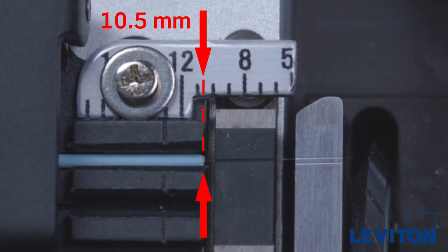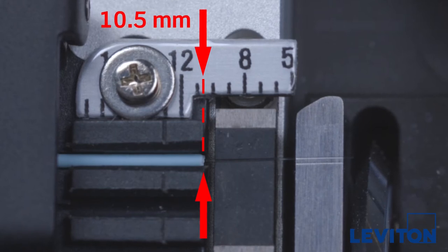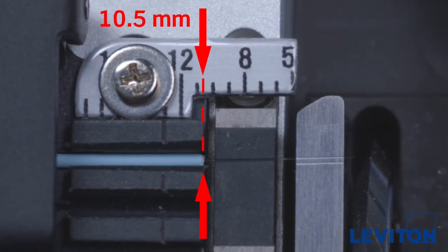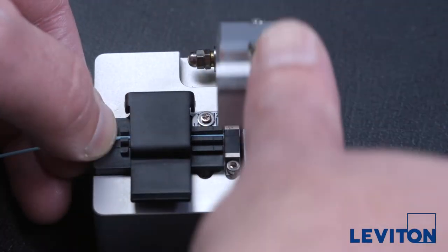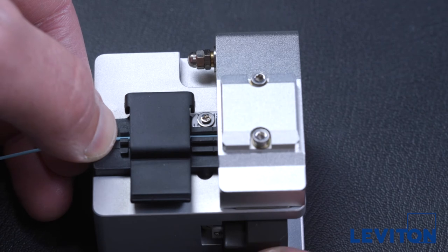It is better to err on a longer cleave measurement, closer to 11 millimeters than 10. Once positioned, secure the fiber with the fiber holder doors. Then cleave the fiber by moving the slide rearward.